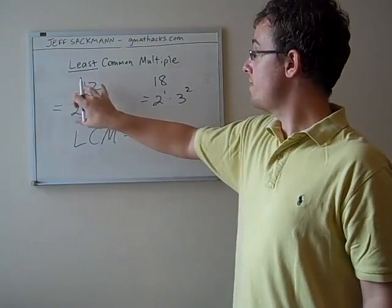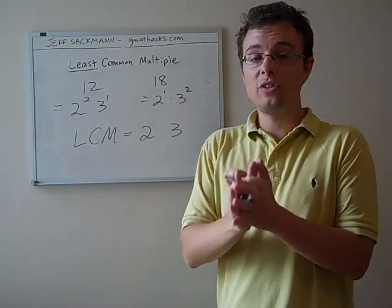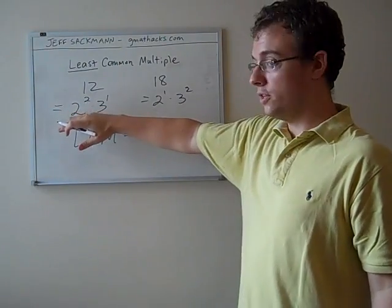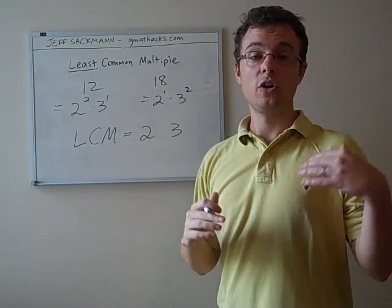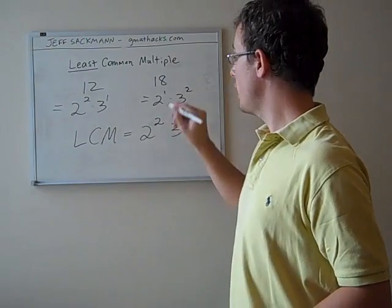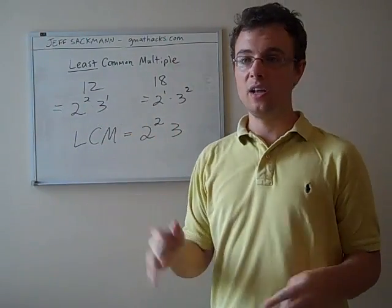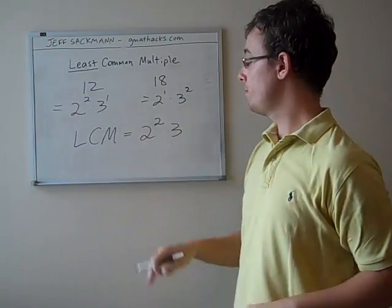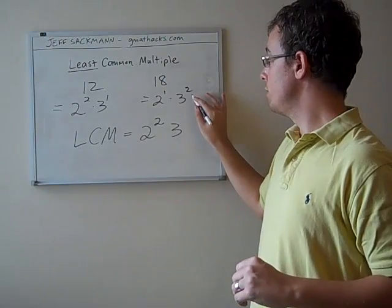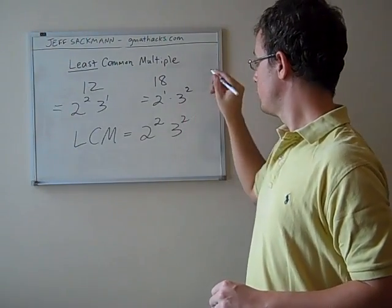So what we do, we look at the prime factorization of 12 and the prime factorization of 18, and take the largest number of 2s in either number. So there are 2 2s in 12, 1 2 in 18. So 12 has more 2s, there are 2 2s. So we're going to put a 2 right here. Notice we're only picking the bigger number, we're not combining them, we're not multiplying them, we're just taking the bigger exponent. And then for 3, same thing, here we've got 1 3, here we've got 2 3s. We take the 2 3s, since that's the bigger number, put that here.